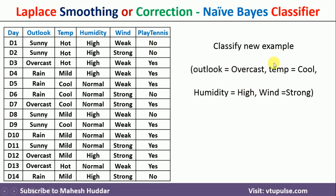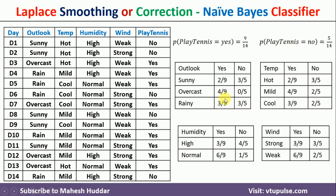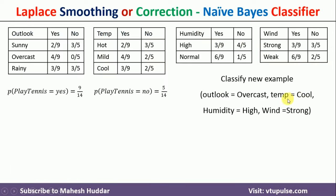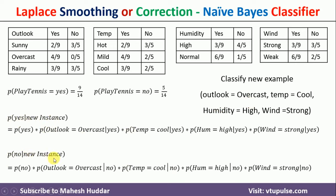To classify this new example into one of the classes, the very first thing we need to do is calculate the prior probabilities — that is probability of Yes and probability of No — as well as the conditional probabilities. Given the prior and conditional probabilities, we have to calculate two posterior probabilities: probability of Yes given the new instance, and probability of No given the new instance.